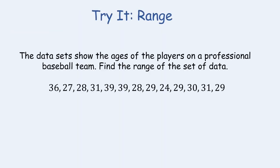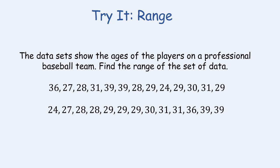Let's find the range. The data set shows the ages of the players on a professional baseball team. Find the range. The ages are listed starting with 36 ending in 29. First, order the numbers from least to greatest. Then recall that range equals greatest value minus least value. The greatest age was 39 and the youngest was 24. 39 minus 24 equals 15. Therefore the range of the players' ages is 15 years.